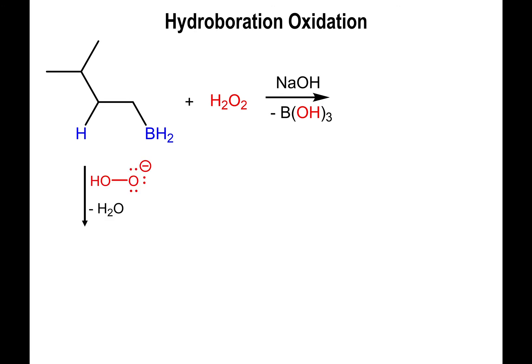The reaction is done under basic conditions. Technically, hydrogen peroxide is slightly more acidic than water, so the basic conditions will deprotonate hydrogen peroxide. Now you have this monohydrogen peroxide ion that attacks the boron group, which is once again electron deficient. So you attack the boron and form this boron-oxygen peroxy functionality.